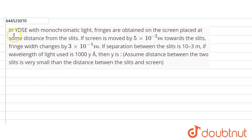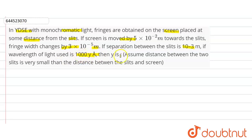Hello friends, the question is given here. In YDSE with monochromatic light, fringes are obtained on the screen placed at some distance from the slit. If the screen is moved by 5×10⁻² meter towards the slit, fringe width changes by 3×10⁻⁵ meter. If the separation between the slits is 10⁻³ meter and the wavelength of light used is 1000y angstrom, then y is equal to what? The slit distance is very small compared to the slit-screen distance.